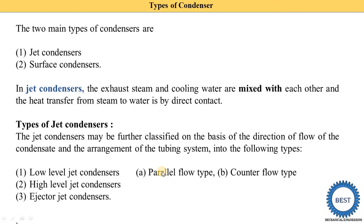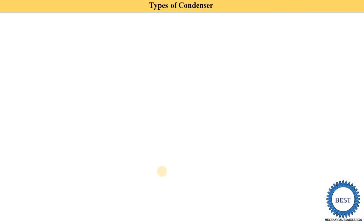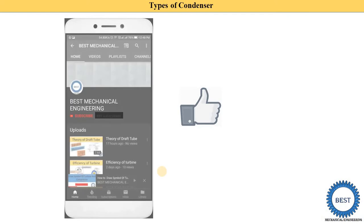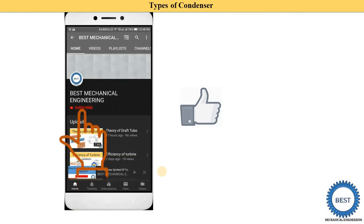For all these types of jet condensers and the surface condenser, I will make separate videos. In those separate videos we will discuss in detail what is the low-level jet condenser, high-level jet condenser, and injector jet condenser. Before moving on to surface condensers, I request you to like the video and subscribe to my channel for more videos related to power plant engineering and other subjects of mechanical engineering. Various links are provided in the description, in the cards, or you can visit the playlist.